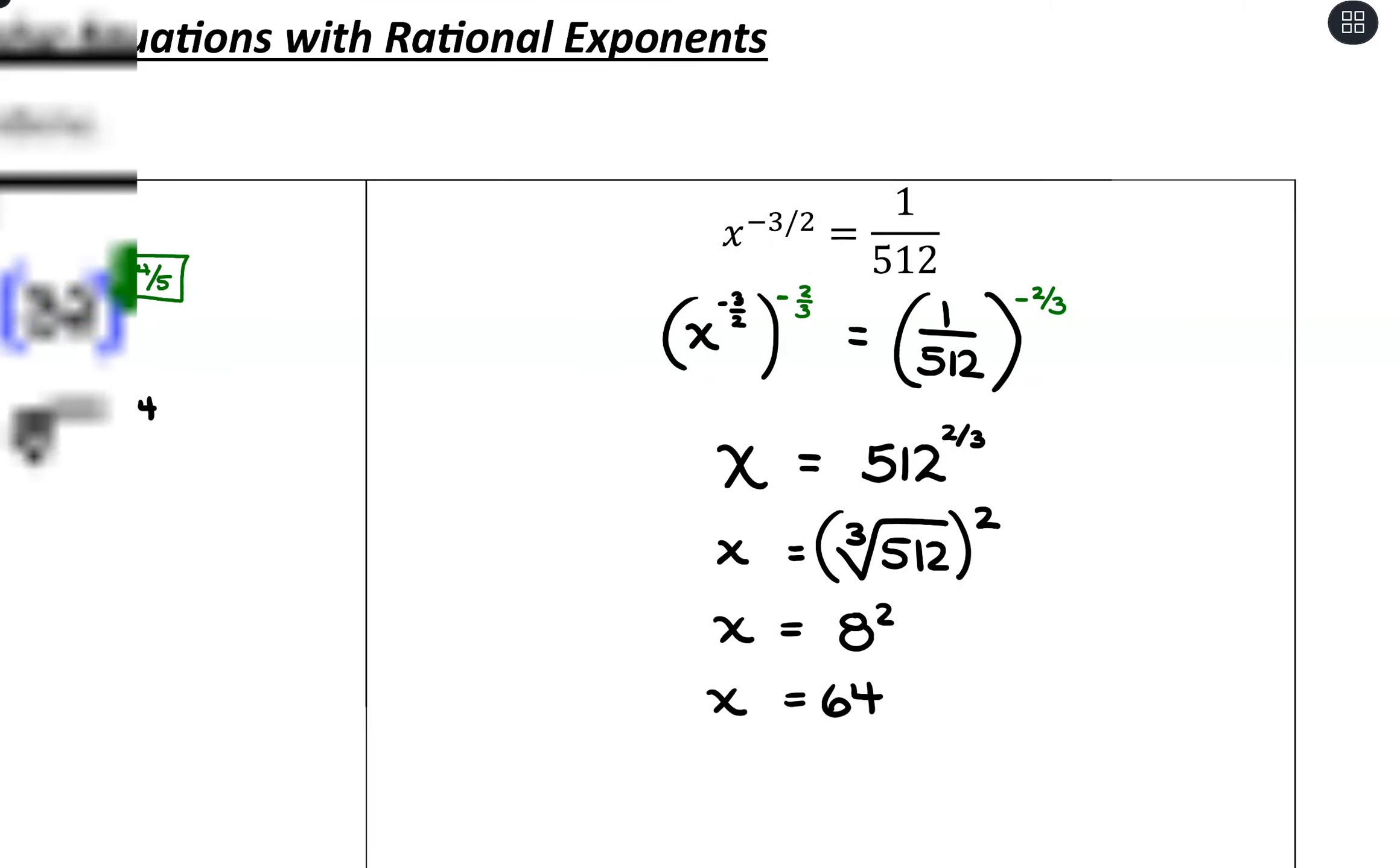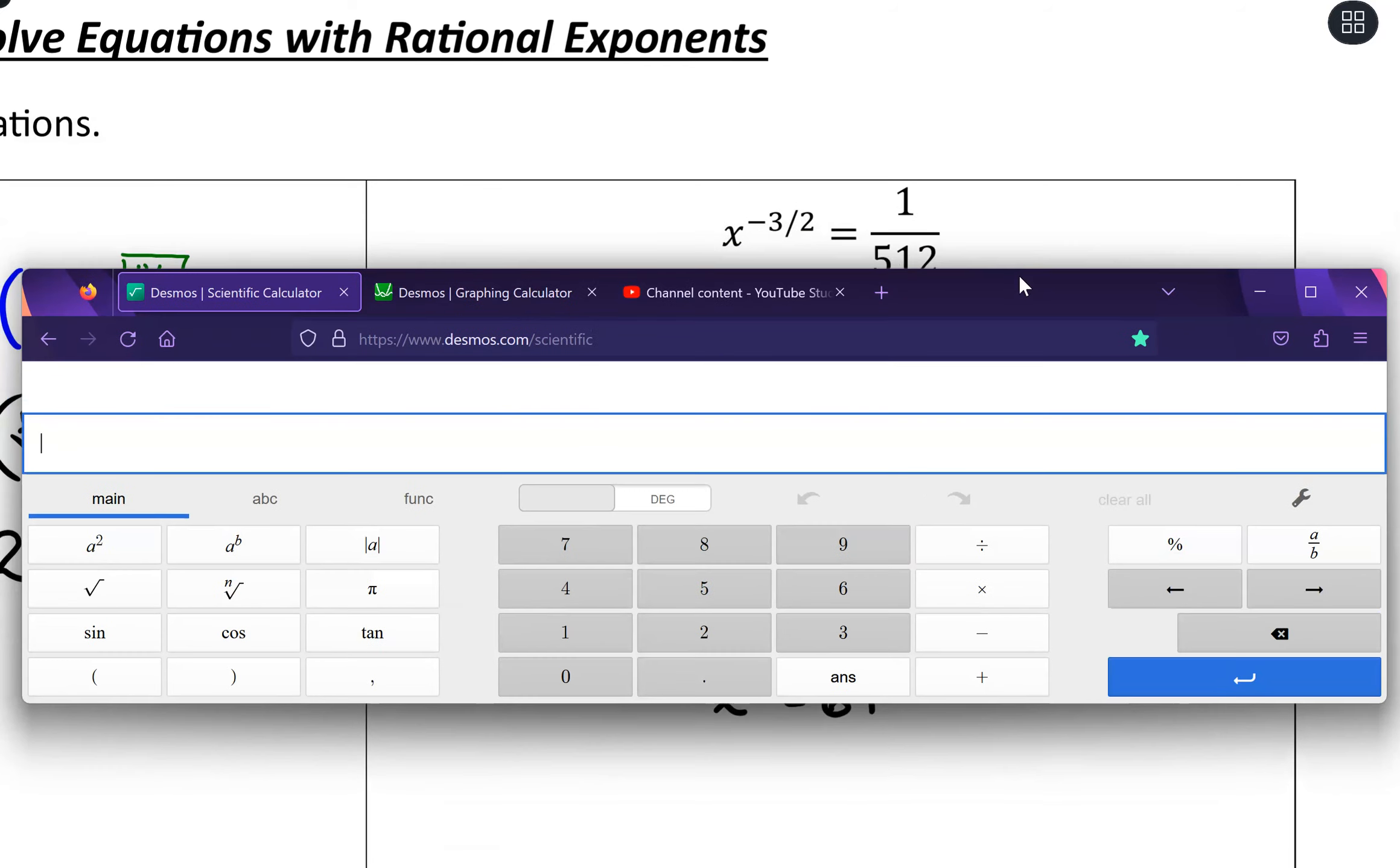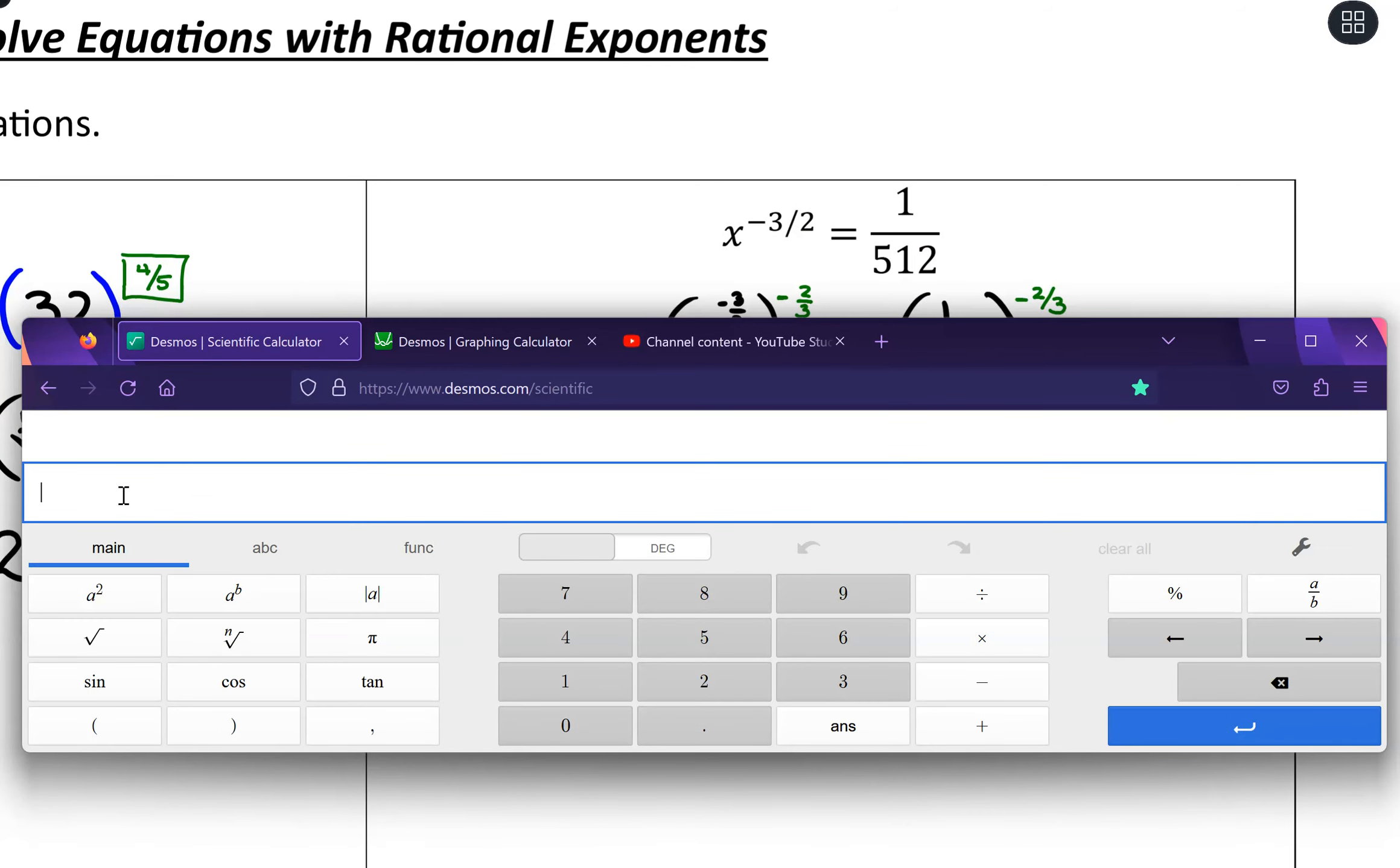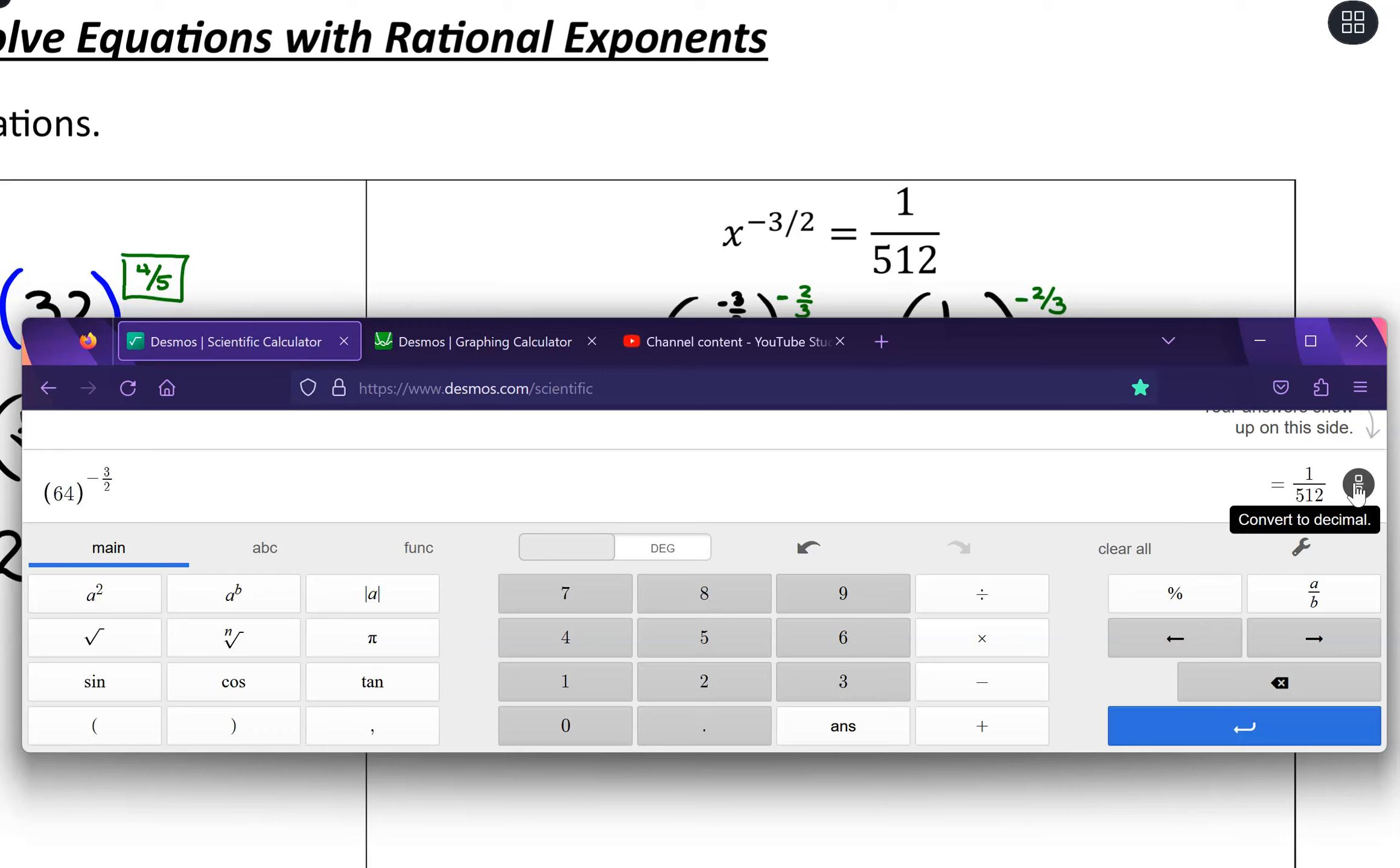And we could go and check our answer by plugging into a calculator, 64 raised to the negative 3 halves power. And we should see that 1 over 512. In fact, let's do those steps in the Desmos scientific calculator so you can see all those pieces. So I'm going x to the negative 3 halves, but we're plugging in 64. So I'm going to have my exponent, negative 3 divided by 2. And it's giving me a decimal here. So to change it to a fraction, what I can do is convert to fraction, and there's my 1 over 512. So that convert to fraction button can be very helpful over there.